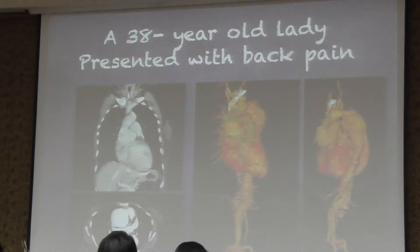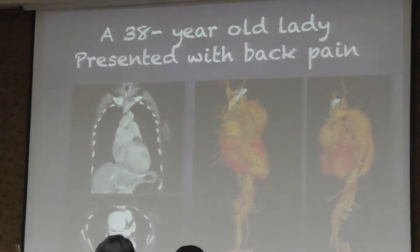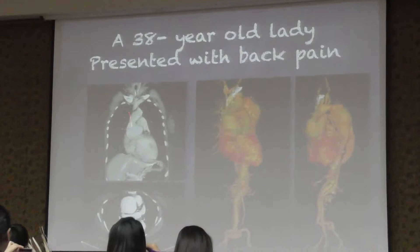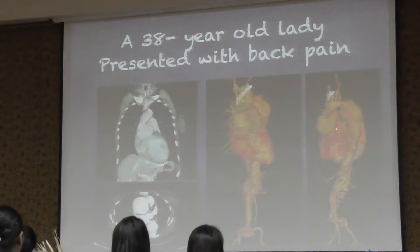Let's start with the case. This is a 38-year-old lady who presented to my hospital with back pain. The CT scan shows aortic root dilatation. The diameter is about 6.9 cm. She also has aortic valve regurgitation and dilatation of the sinuses in the EODA. You can see in this picture a large dilatation as well.